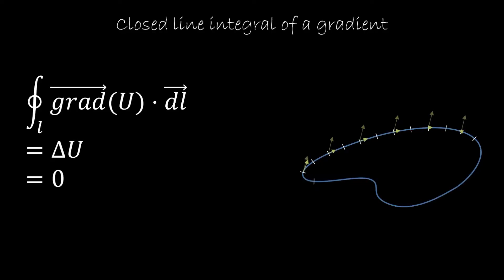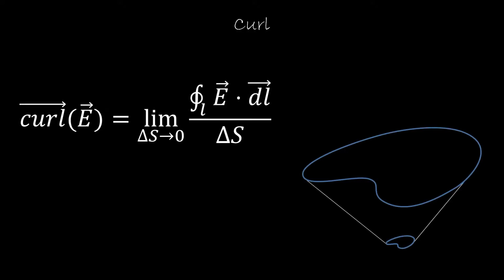Everything that we want to do, as before, is define a local counterpart of the closed line integral. This is because we have the notion from physics that things that are close to each other affect each other. So we want to take the line integral and make the line smaller and smaller.